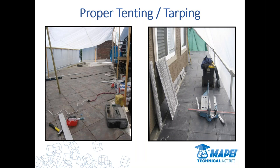Proper tenting and tarping — if you're working in situations where you need to control the environment, you've got to take steps to do it. A lot of this is about anticipation and understanding where you're working. Anything as simple as a sunny spot as you're working versus adjacent shaded areas — you're going to see a big difference in product performance. Your mortars can skin over, and you get differential drying. It's just about taking the proper precautions. These are good examples of how that's been done.